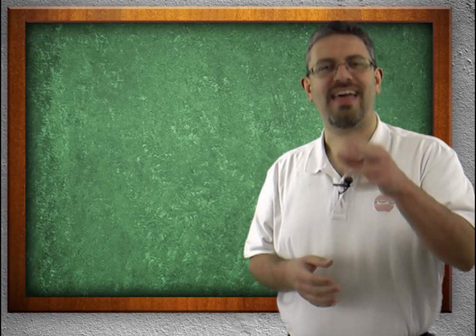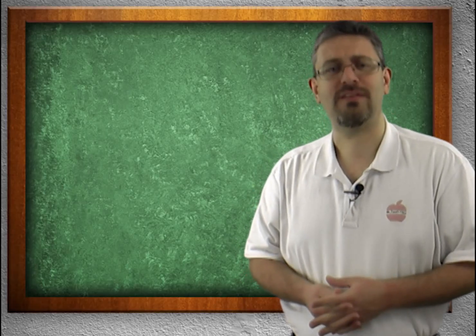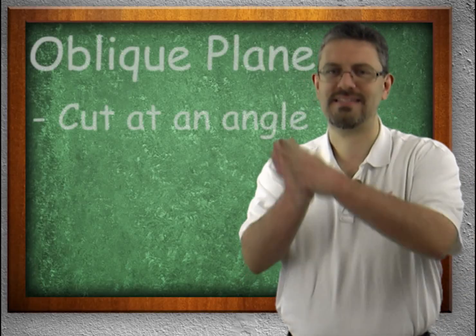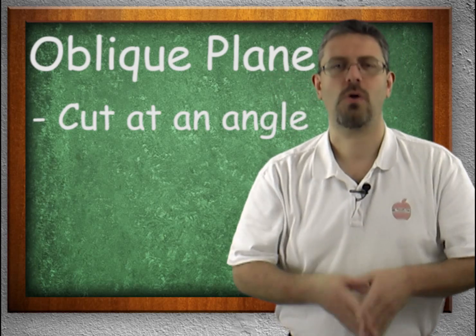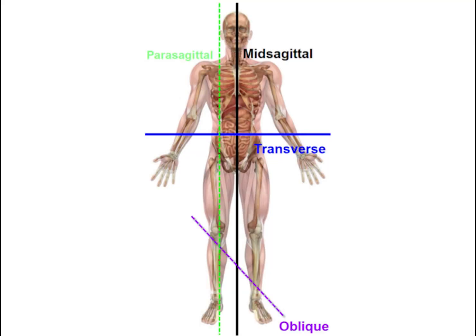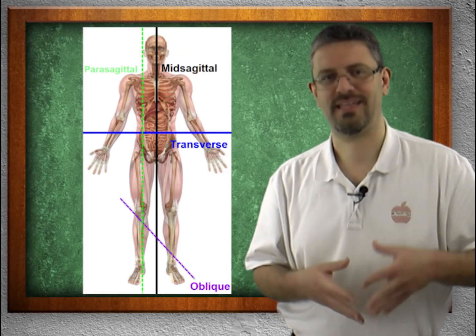I watch way too many movies. The last plane we need to be aware of is an oblique plane — that's a diagonal cut at an angle. So to recap: a left and a right side is a sagittal cut; equal-equal is mid-sagittal; off to one side is parasagittal. A top and a bottom cut is a transverse plane. A front and a back is a coronal or frontal plane. And a cut at an angle — like any Friday the 13th movie — is an oblique cut.